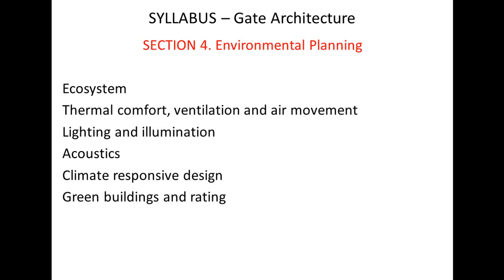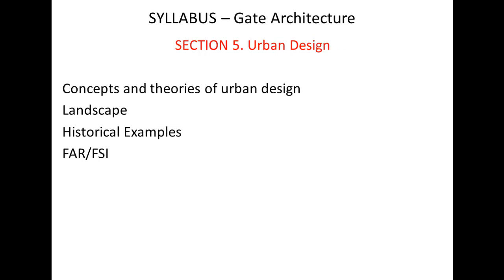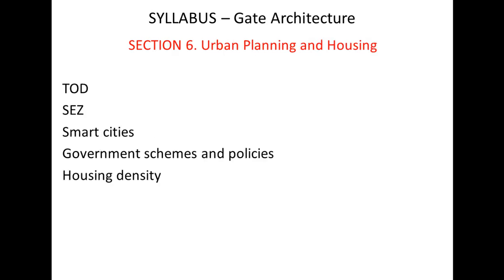Section five is about Urban Design. You will learn about concepts and theories of urban design, how urban form evolved to today, and previous theories related to urban design. The second topic is landscape — you have to remember botanical names and nomenclature for basic trees, shrubs, and elements like softscape and hardscape used in landscape. Third are historical examples of cities — how major cities are planned and their exclusive features. Fourth are FAR/FSI problems, which are entirely based on numericals. Section five is about 13 percent of weightage.